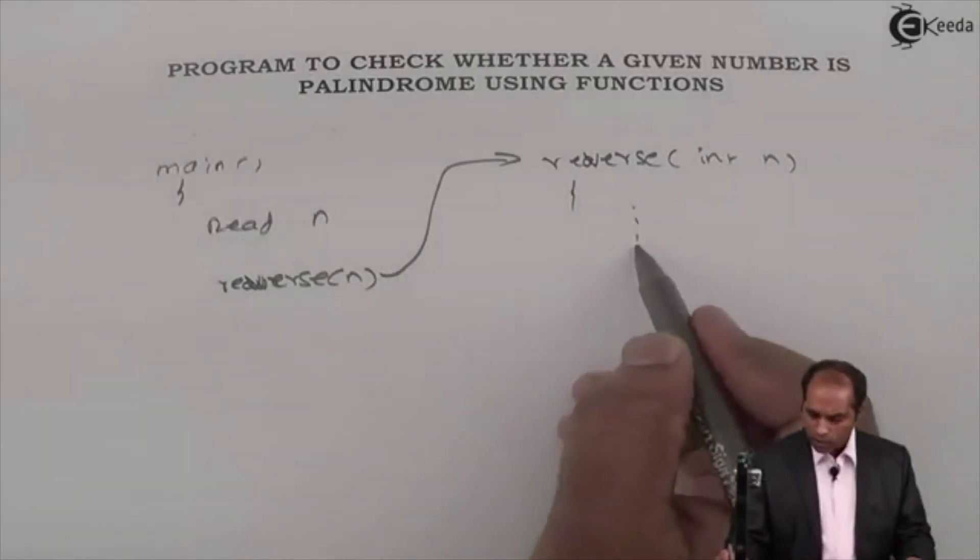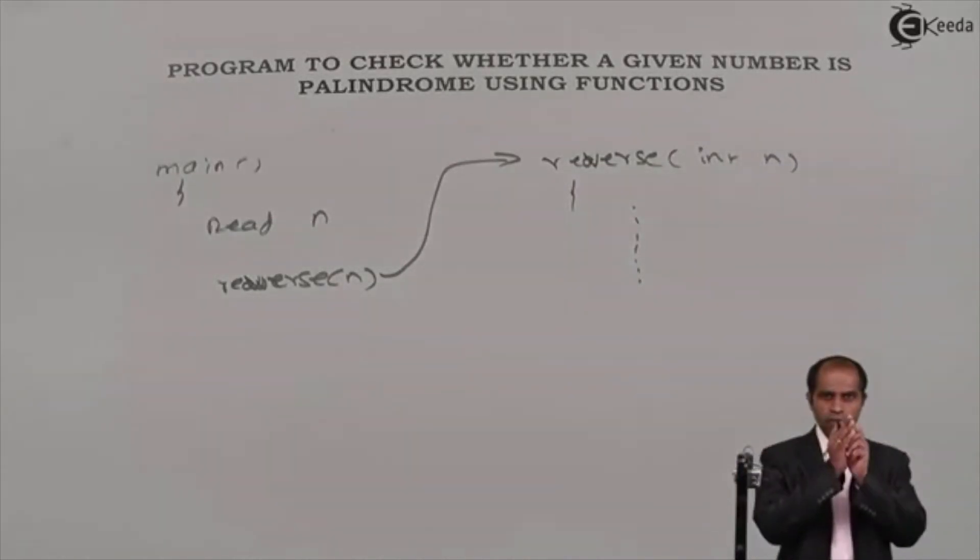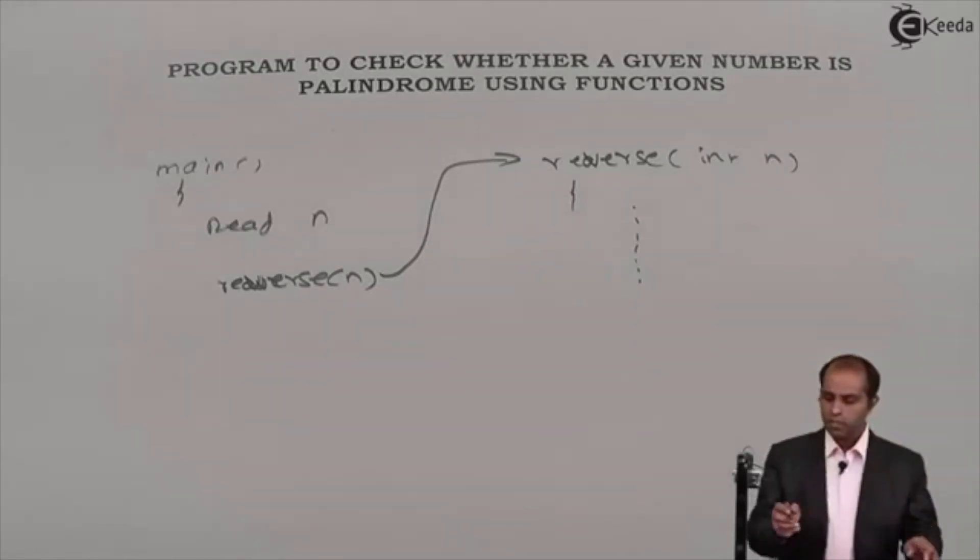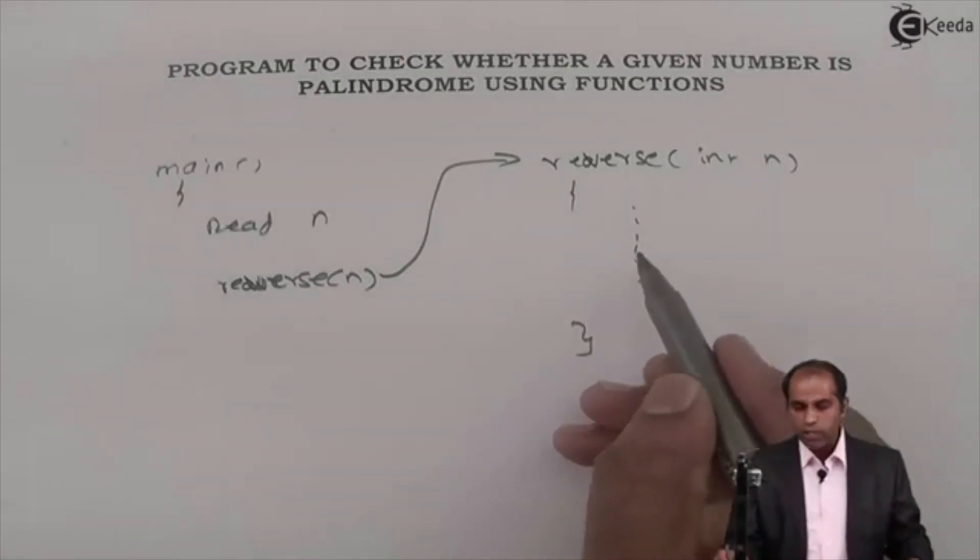Now what this function does is this function uses a while loop because I am supposed to synthesize that number. I am supposed to bisect that particular number and take that number into pieces and this number has to be reversed.